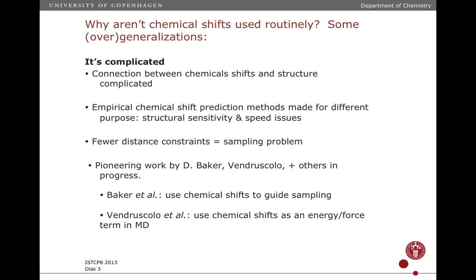Theoretical chemistry can help here. There are some empirical chemical shift predictors — structure in, chemical shifts out — but they're made for different purposes; they're not really made for determining NMR structures, and that leads to problems. The other problem with moving from distance constraints to using chemical shifts and force fields is that if you have fewer distance constraints, your sampling problem is larger. These distance constraints really confine the conformational space you have to search, so as you get fewer of them the sampling problem becomes larger — and again, that's a computational problem.